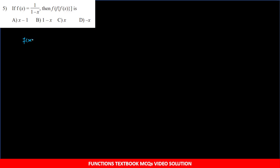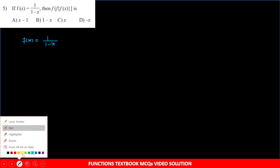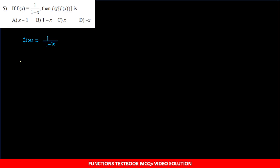Question number 5: if F(x) = 1/(1 - x), then F(F(F(x))) is equal to? F(x) = 1/(1 - x) given hai, aur hume composite function F(F(F(x))) find karna hai.